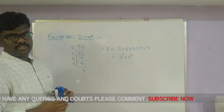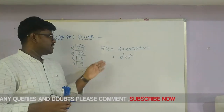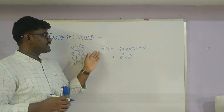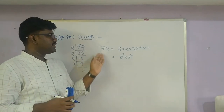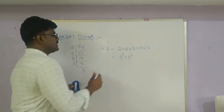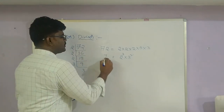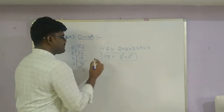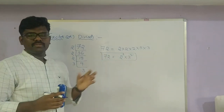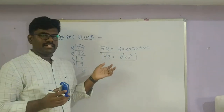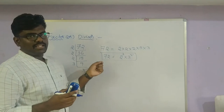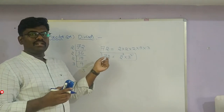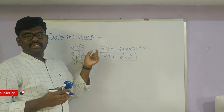So we have the prime factorization of 72: 2 cubed into 3 squared. Every composite number can be written as a product of prime numbers — we can write it in prime factorization form.